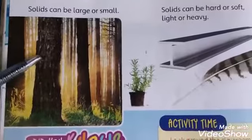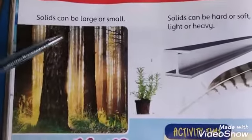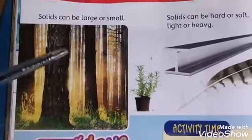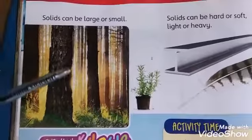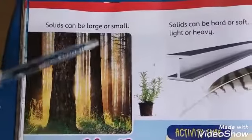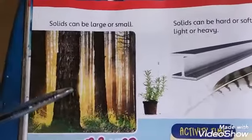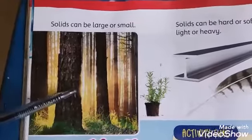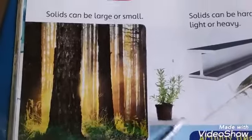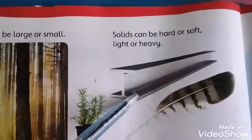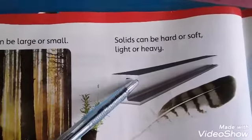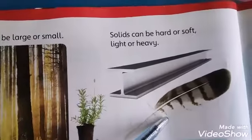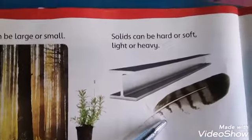On the next page, there are some solids shown in enlarged and small size. Some solids can be large or small — for example, a large tree or a small plant. Some solids can be hard or soft — for example, hard metal or a soft bird wing.